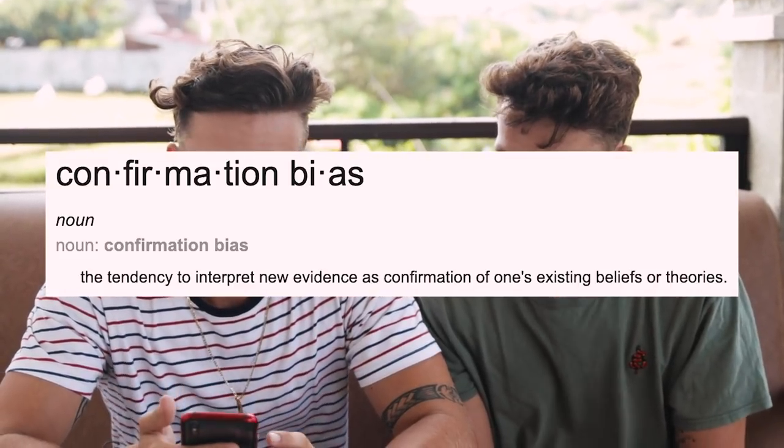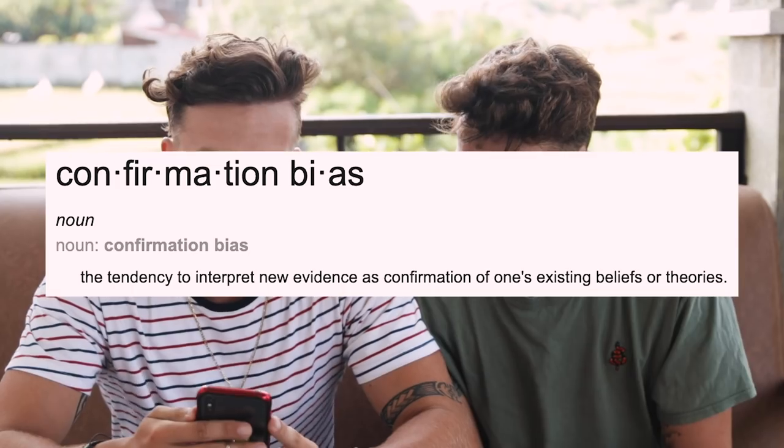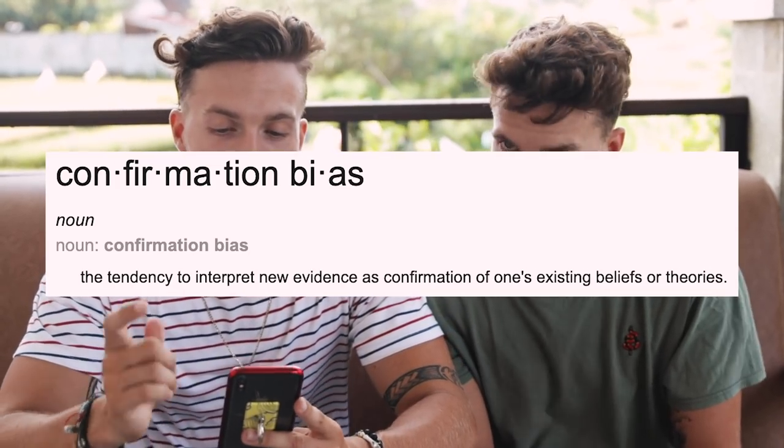Confirmation bias is the tendency to search for, interpret, favor, and recall information in a way that confirms one's pre-existing beliefs. So basically, confirmation bias is where you're looking for things that align with your beliefs. In the introduction of your book, you want to use confirmation bias to your advantage. You want to instill certain beliefs in the reader right at the beginning — and this applies to your book cover, title, and description as well — so that when they purchase your book, they're expecting a high quality book. The beliefs you want to instill are that this book is everything they're looking for, it will solve their problems, it will deliver on everything promised, and it's going to be an amazing reading experience.